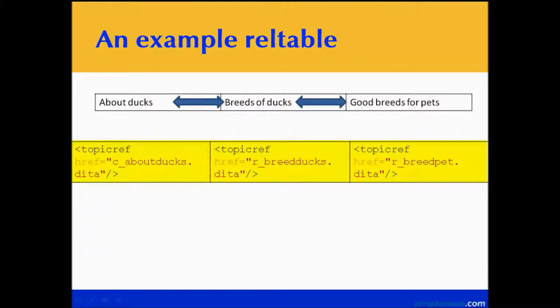So when we publish these topics, any two of these topics are related in such a way that we should see related topics or related concepts at the end of these various topics. Now, the first one is a concept topic — the C underscore indicates this is a concept. The next two, the R underscore, means that these are reference topics.